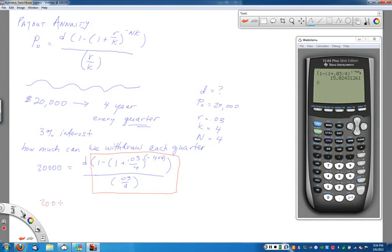So over here, what I've got is that 20,000 equals D times this value here, 15.0243 and so on. And then to finish getting the D by itself, just divide by that 15.0243 number on each side.